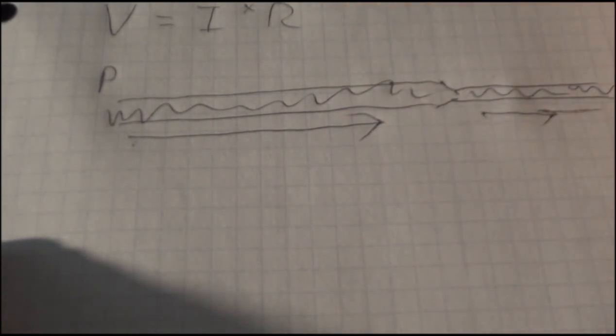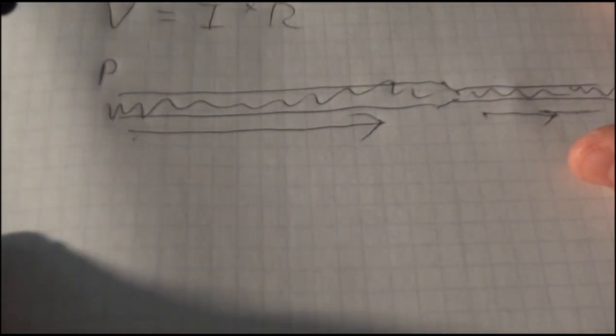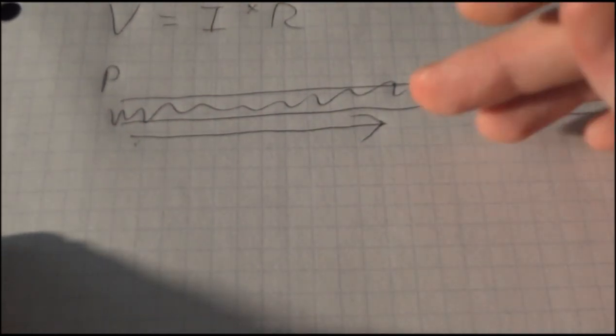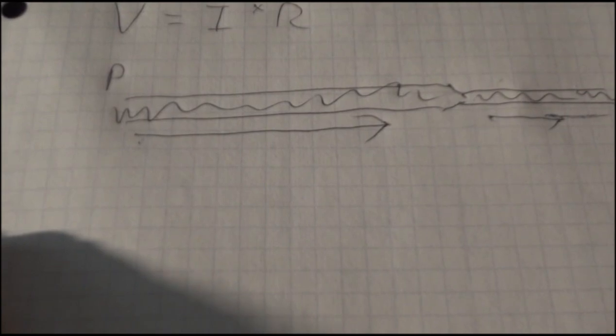A larger hose, the water flows through much more easily. A smaller hose, the water does not flow easily. So that's the way to look at resistance.